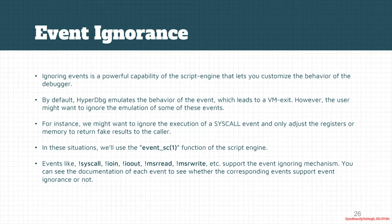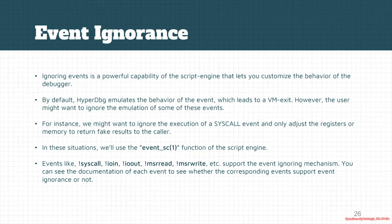There are also other mechanisms for ignoring events. Event ignorance is a powerful feature of the HyperDbg script engine. Commands that support event ignorance include the syscall command, IO in/out commands, MSR read/write, and others. These commands can be ignored — their effects will be disregarded for certain conditions in the script engine. HyperDbg generally emulates the behavior of events after VM exits, so to ignore that emulation, you can use a function called event_sc (event short-circuiting).